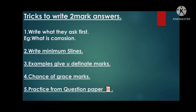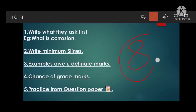Now the last concept: two-mark questions. As I told in the previous video, these two-mark questions will give you distinction or fail your answer sheet — they are very important. You have to attempt all eight two-mark questions. Write what they ask first, then classify and write a minimum of five lines — five lines are mandatory for two marks. Give examples — examples give you definite marks. For example, for 'what is corrosion,' just write the definition of corrosion with an example, and you'll get two out of two.